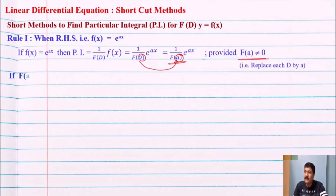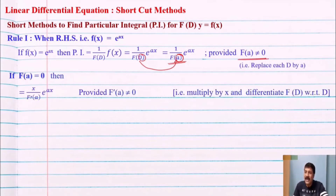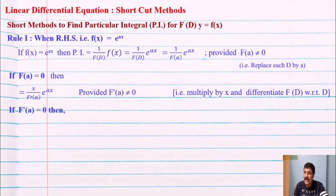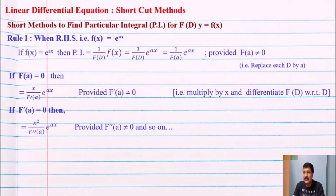But if f(a) equals zero, then PI = x / f'(a) · e^(ax), provided f'(a) is not equal to zero. Multiply by x and differentiate f(D) with respect to D, then again replace D by a, provided the denominator is not equal to zero. If that denominator also equals zero, multiply by x again — so already x is there, making it x squared — and take the next derivative.